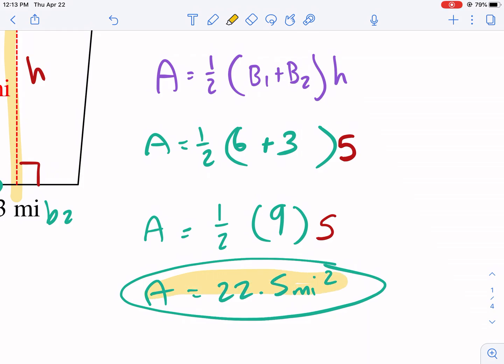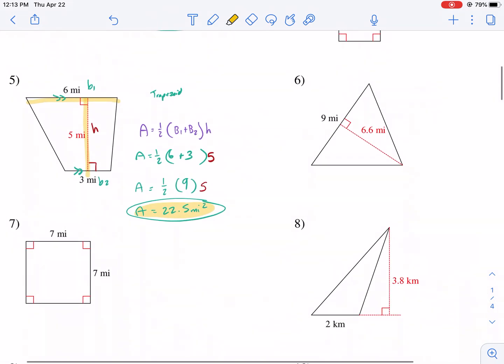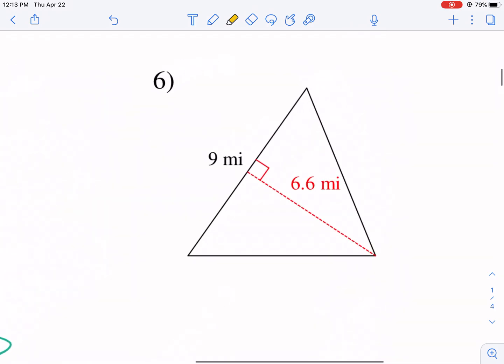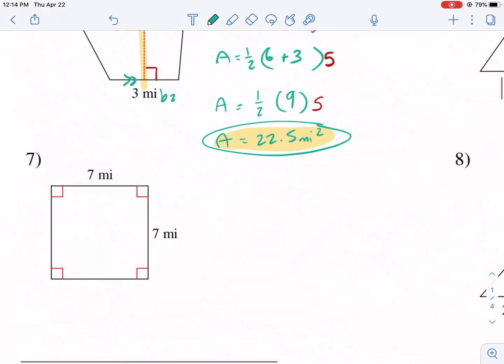Hopefully, you guys picked up the little nuance of that strategy. Always trying to make it easier to multiply in your head if possible. And now we just have more of the same shape. So if we multiply 9 times 6.6 for this one. And we divide that by 2. That would be our area. So our area here would be 29.7 miles squared.